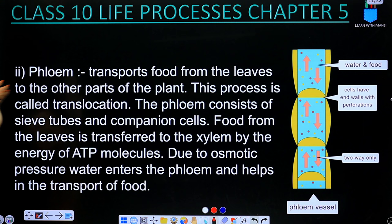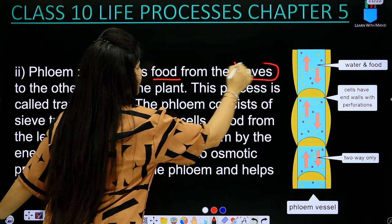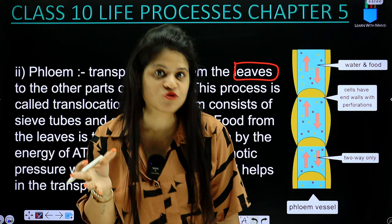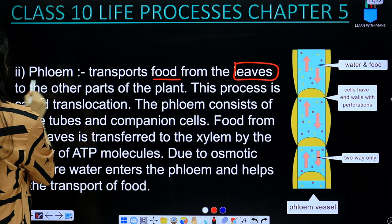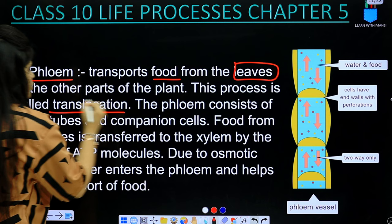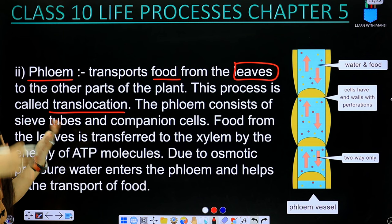Now, phloem transports food from the leaves. We know that our plants make food through photosynthesis in the leaves, because stomata and all related structures are there. All the food that is made in the leaves is transported to other parts of the plant — this is the work of phloem. This process is called translocation.